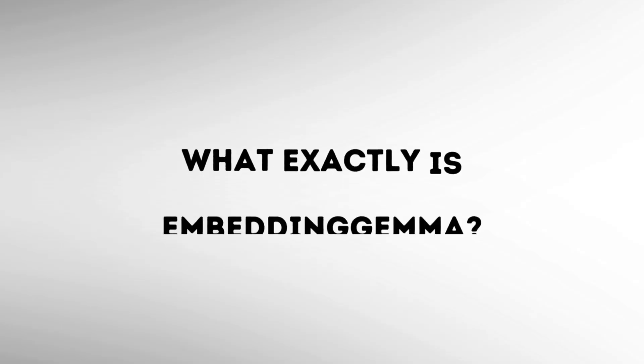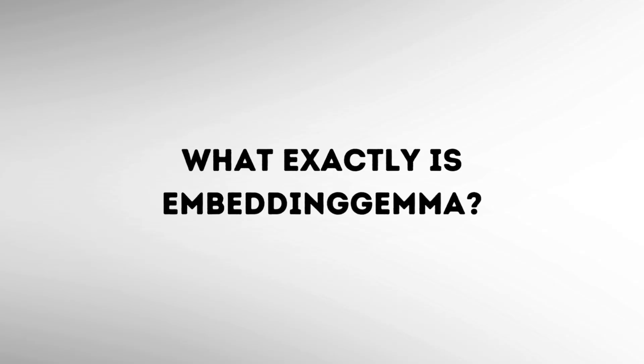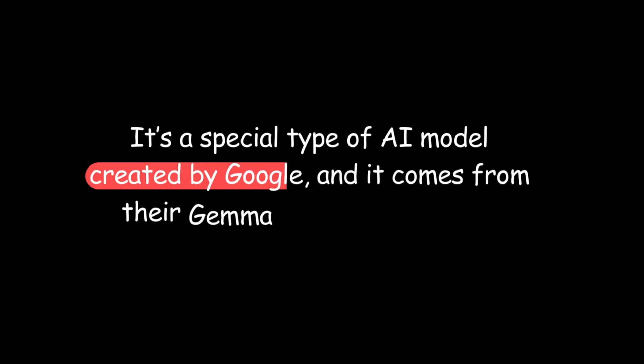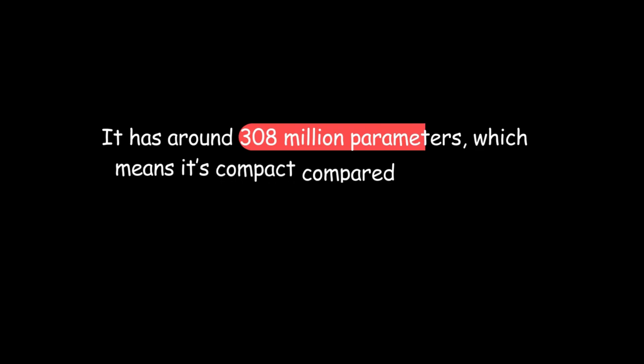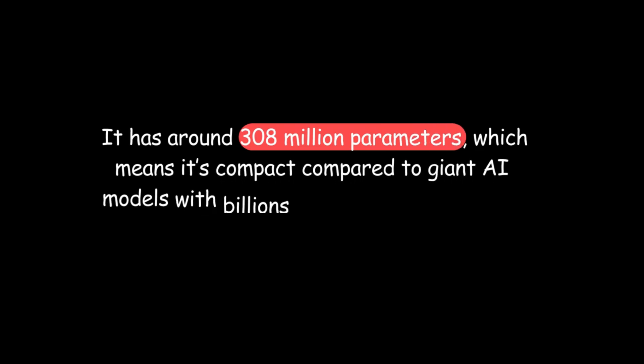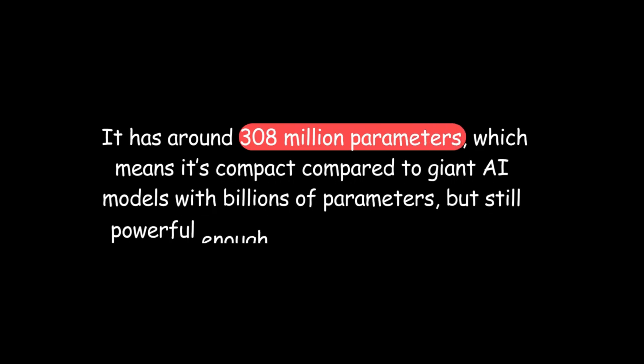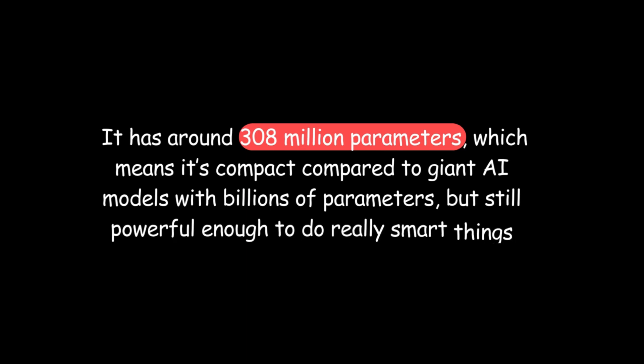So what exactly is Embedding Gemma? In simple words, it's a special type of AI model created by Google, and it comes from their Gemma 3 family of models. Unlike big heavy AI systems that need powerful computers or cloud servers, Embedding Gemma is designed to be small and efficient. It has around 308 million parameters, which means it's compact compared to giant AI models with billions of parameters, but still powerful enough to do really smart things.